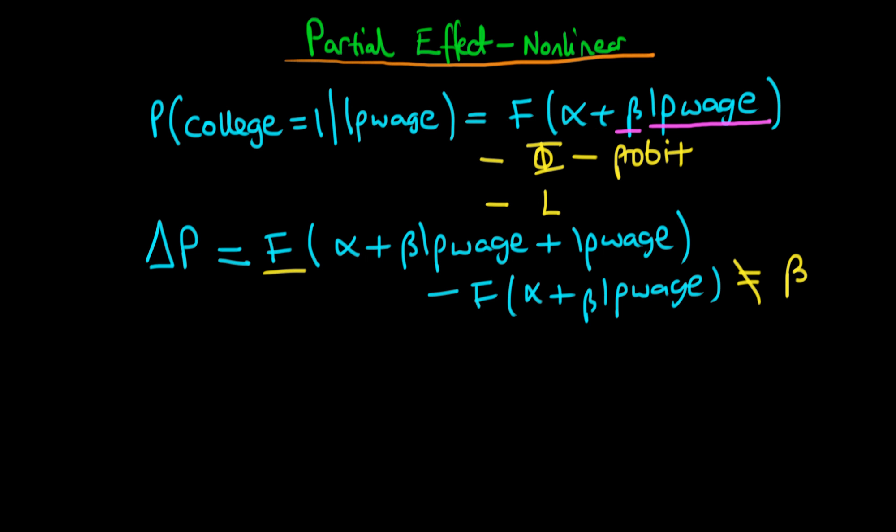So how do we actually calculate the increment in probability of a one-unit change in an independent variable? Well, we could do it by this particular method here. So this would be essentially just saying if we were to move one unit to the right along that particular independent variable, in this case log of parental wage, what would happen to the probability?